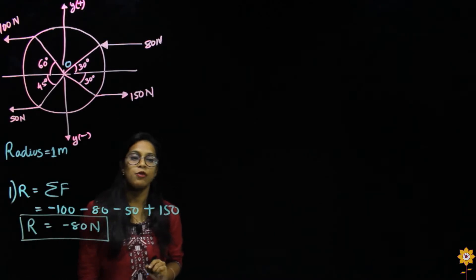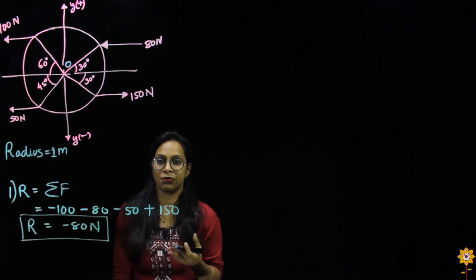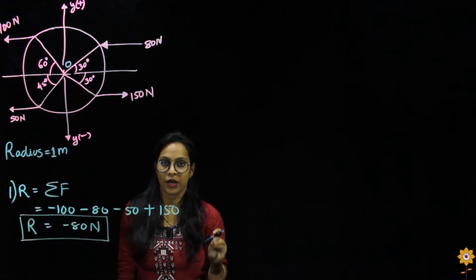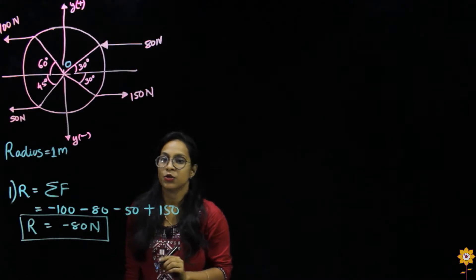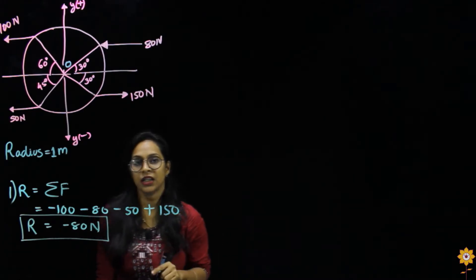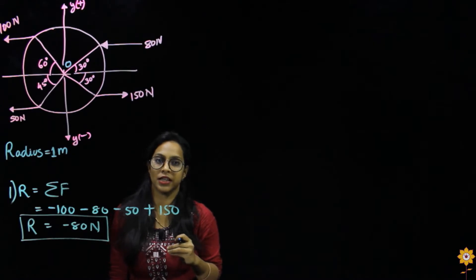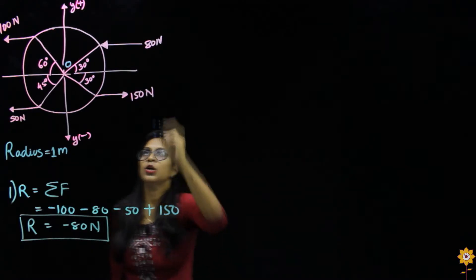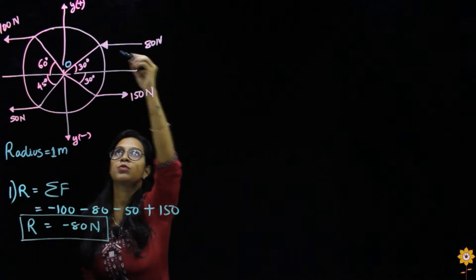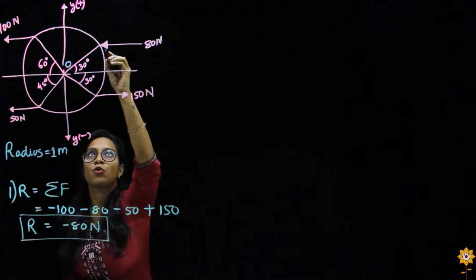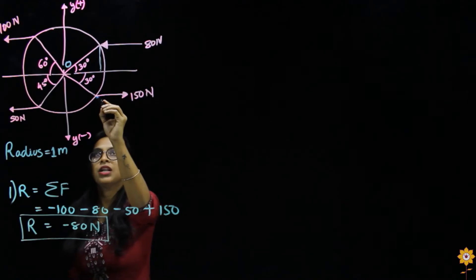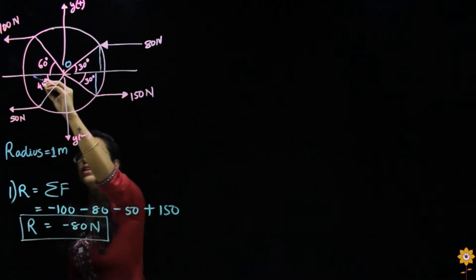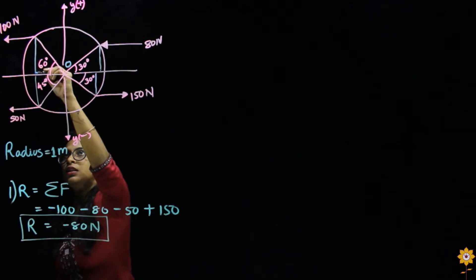Now, whenever we have to locate a resultant force with respect to a point, we need to find the moment about that point because we have to apply Varignan's theorem. To find the moment, we need the perpendicular distances to all the forces. The perpendicular distance to each force from O needs to be determined. So we need to find all four perpendicular distances.